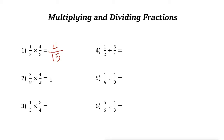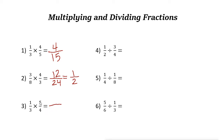Next example: 3/8 times 4/3. Multiply the numerators: 3 times 4 is 12. Multiply the denominators: 8 times 3 is 24. Divide both by 12 — 12 divided by 12 is 1, 24 divided by 12 is 2 — so the answer is 1/2. Next: 1 times 5 is 5, and 3 times 4 is 12.